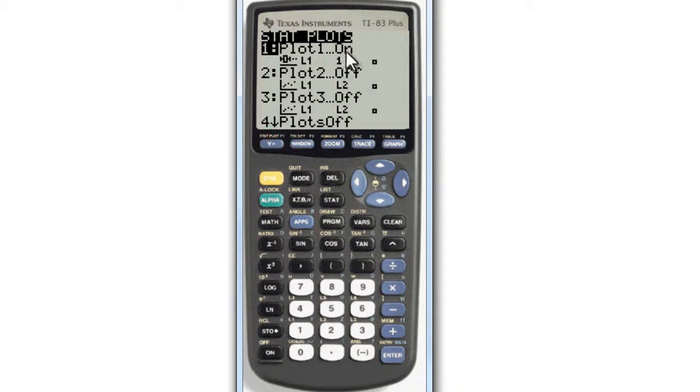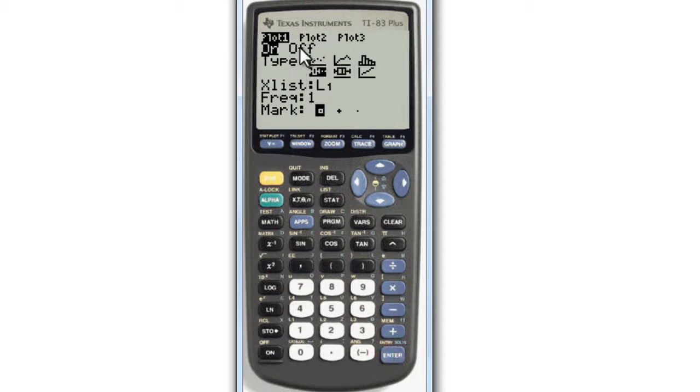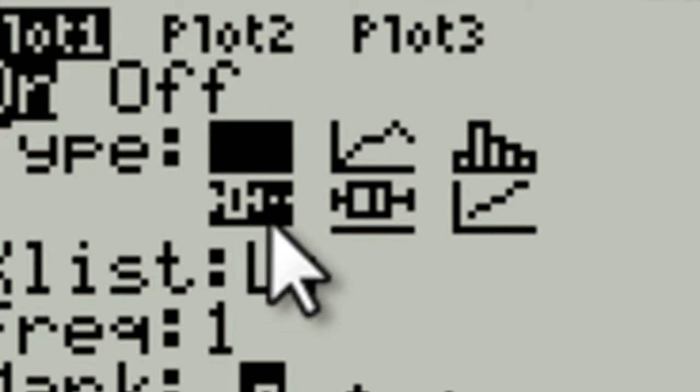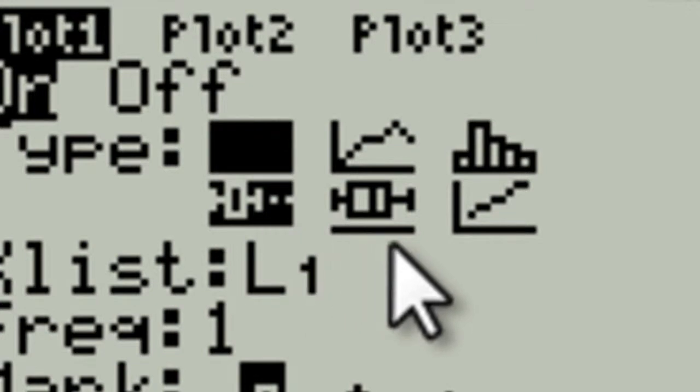This one's already turned ON. If it's turned off, you would select ON in that first option, and then select which kind of graph you want. This one here is a box plot with a couple of little outliers shown, and this one is also a box plot